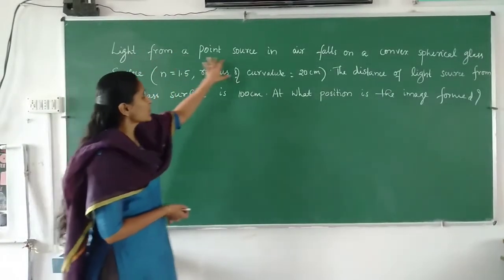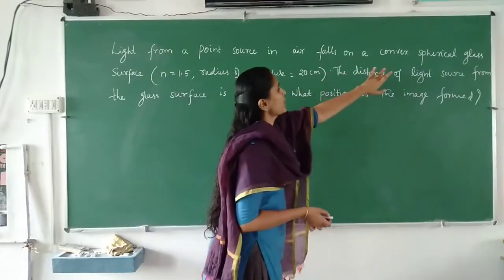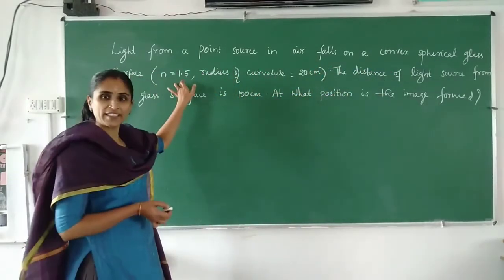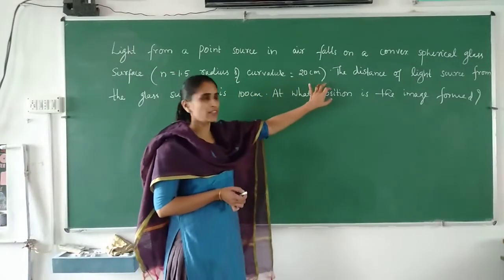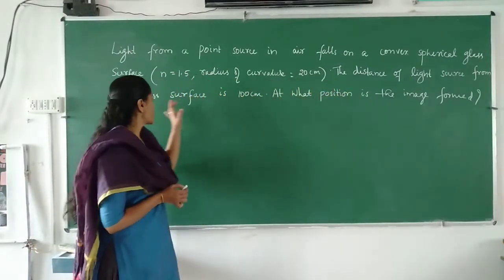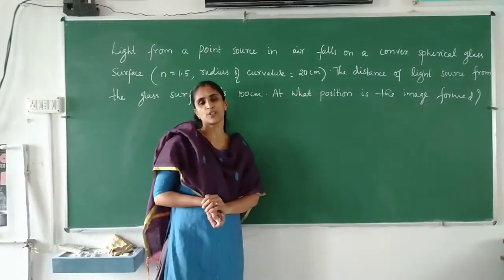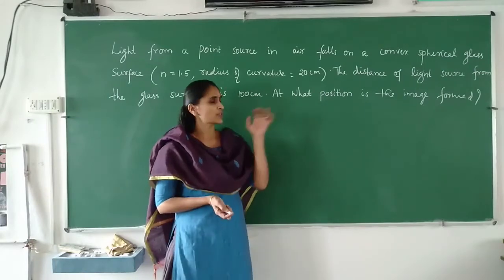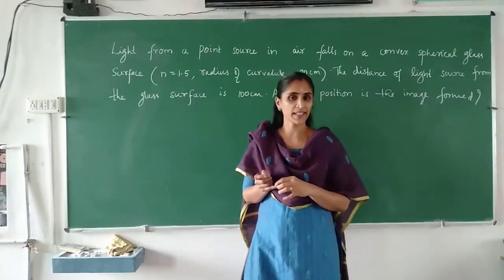Here you can see that light from the point source is in air. It falls on a convex spherical glass surface. The refractive index is given as 1.5. The radius of curvature is about 20 cm. The distance of the light source from the surface is 100 cm, and we have to find the position of the image. This is the problem related to refraction at a convex spherical surface.